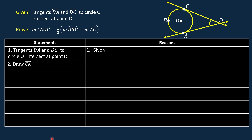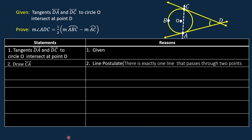For our second statement, draw line CA. This is line CA. It passes through point C and point A. There is exactly one line that passes through two points. The two points here are point C and point A.